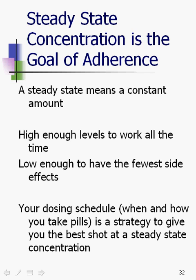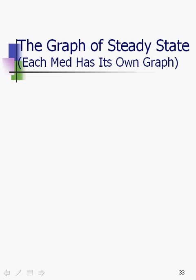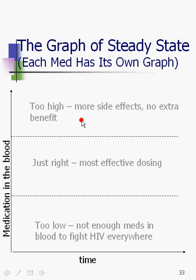This is true for not just HIV meds — this is true for every kind of med that might be prescribed. But obviously our interest here is in helping folks living with HIV understand why the pills are prescribed the way that they are. Let's look at this graph of steady state. Each medicine is going to have its own graph. This x-axis is time, and this axis is the amount of medication in the blood.